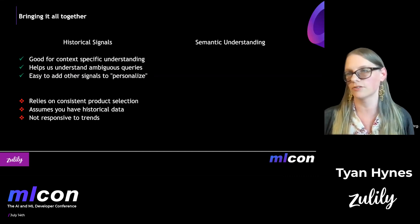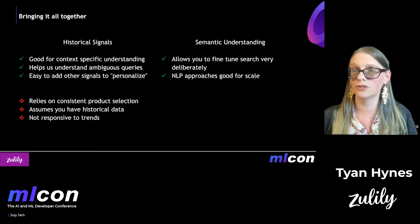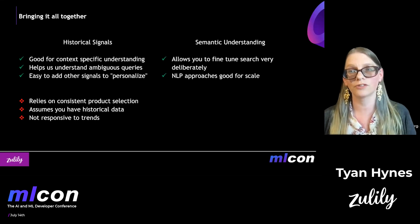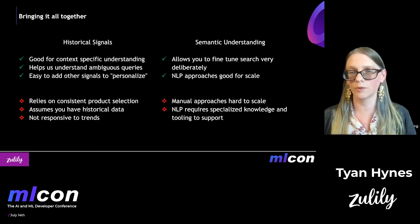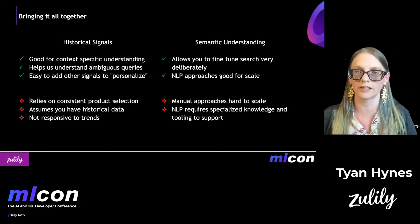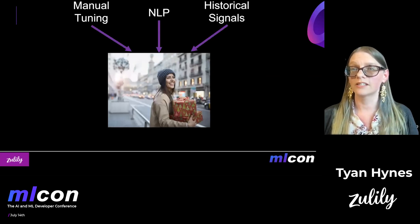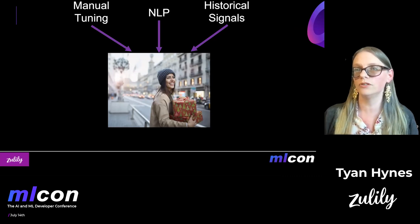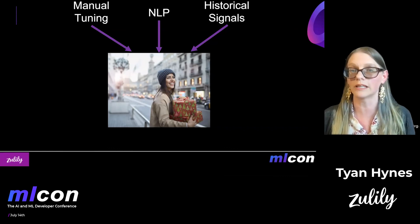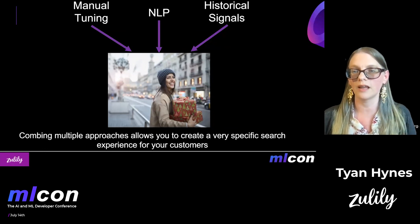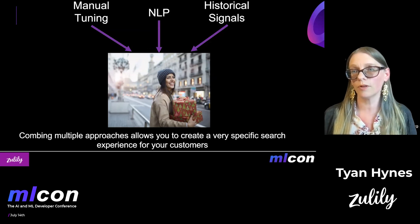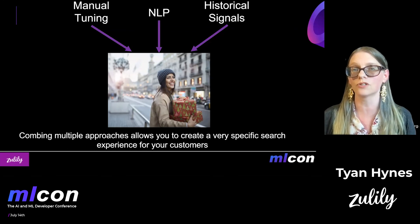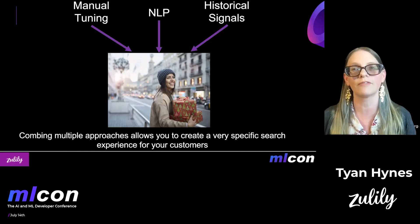Let's compare and contrast this with semantic understanding. Manual semantic understanding lets you fine tune deliberately, and NLP is also really good for scale. But manual versions are hard to scale when things are changing a lot or when you have a really large product selection, and NLP requires specialized knowledge and tooling. Ultimately, what we want to do is take some combination of all of these. You might want to do manual tuning for some queries, use NLP for others, and apply historical signals for parts of your product selection that are really consistent. Combining all these approaches allows you to create a very specific search experience.